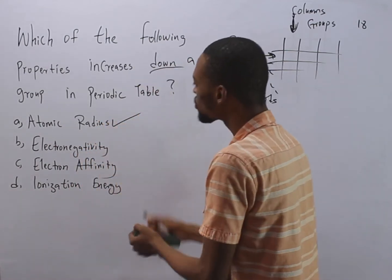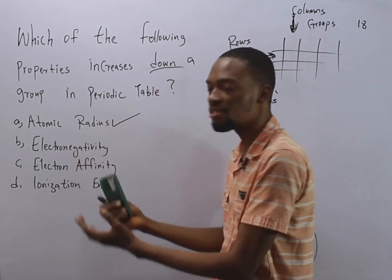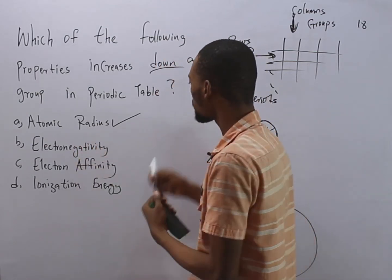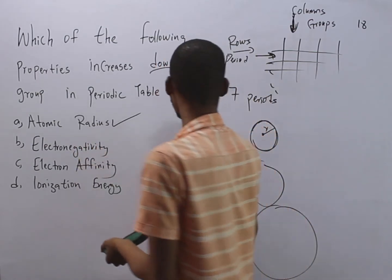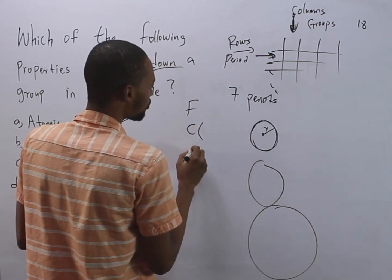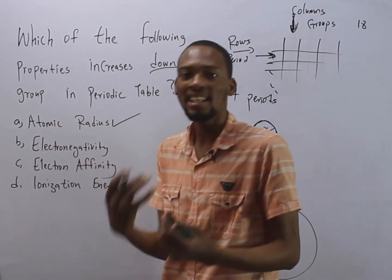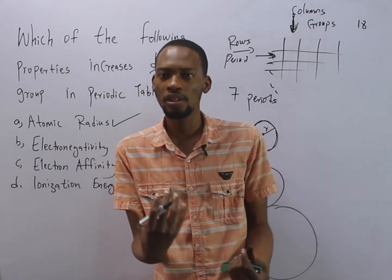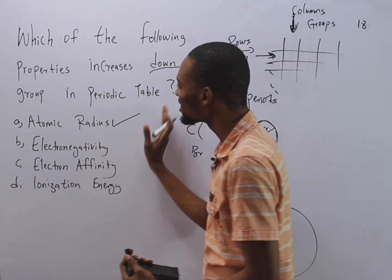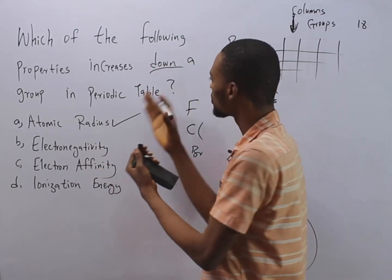Meanwhile, down the group, electronegativity decreases. This is why fluorine is more electronegative than chlorine, bromine, iodine and other elements in the halogen group. So because electronegativity decreases down the group.